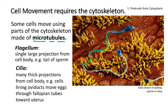Cilia, on the other hand, which are shown in yellow in this micrograph, are very short microtubules but they have a lawn-like quality — you have a whole lot of them protruding from the surface of the same cell. And they're used to move material across the surface of a cell. What we're looking at is actually a section inside the oviduct or the fallopian tube. The egg is moved through the fallopian tube by the beating of the cilia toward the uterus. And sperm swim upstream.